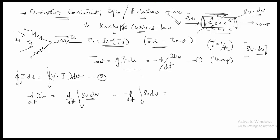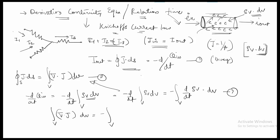Performing the differentiation, minus d/dt of the integral of ρv dv equals the integral of d/dt of ρv times dv. This is the third equation. Substituting into the divergence theorem result, the volume integrals on both sides cancel, giving us del dot J equals minus d(ρv)/dt.